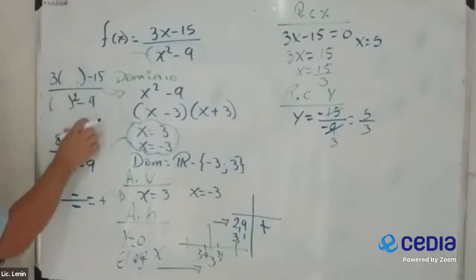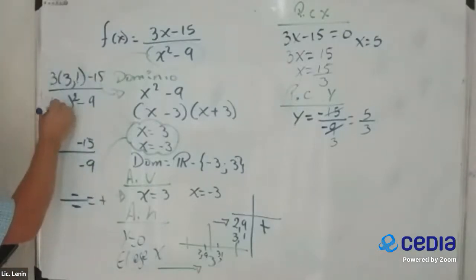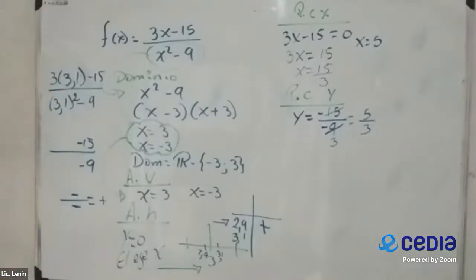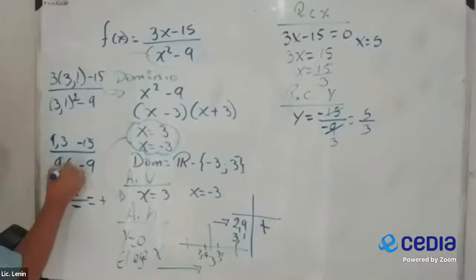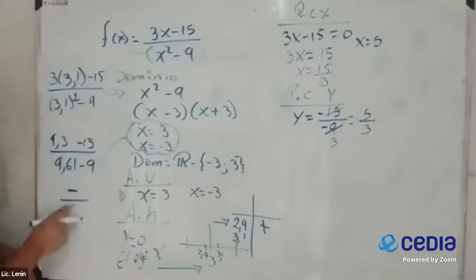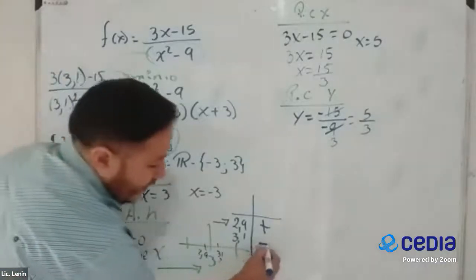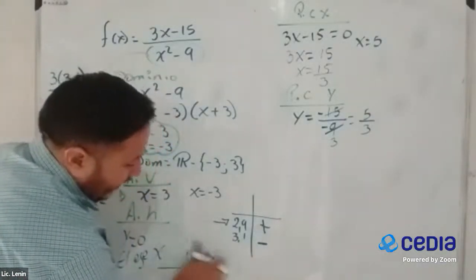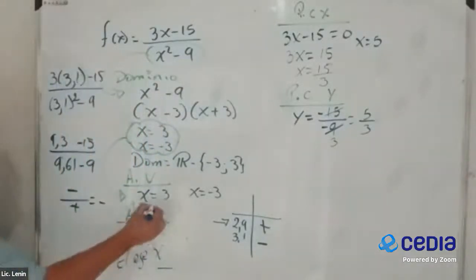¿Qué sucede cuando me acerco por la derecha? Reemplacemos 3.1. 3.1 por 3 nos da 9,3. Y 3.1 al cuadrado me da 9,61. En el de arriba, obviamente pongo el signo del número mayor. Me da negativo. En el de acá, el número mayor, el de aquí me da positivo. Menos por más, me da menos. Entonces, en el de aquí, me va a salir negativo.